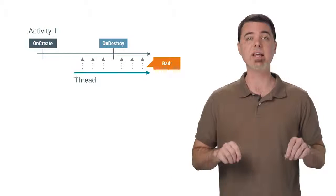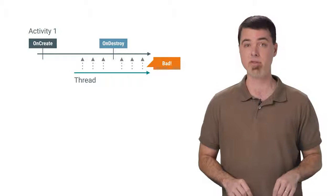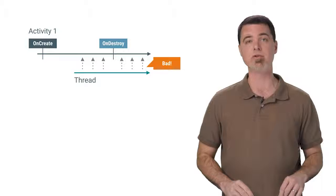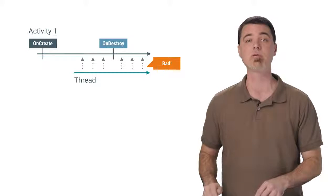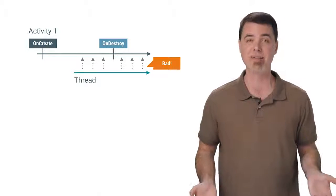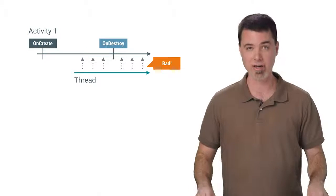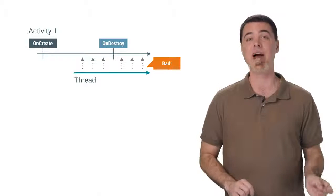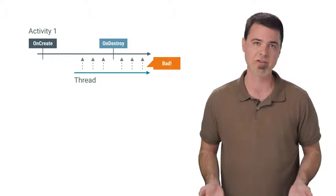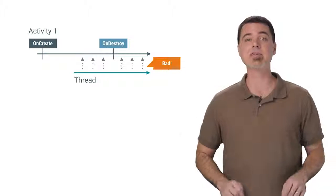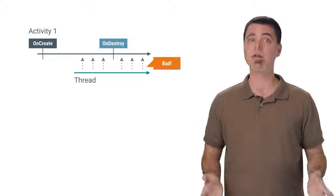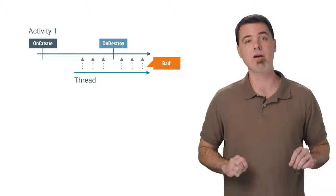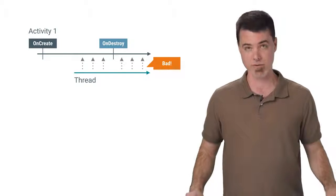If the activity ends before the work is complete, a few things will happen. First, because of the strong references to the views, the activity object will be kept in memory until the work finally finishes. This is a memory leak, and we don't have to tell you this is bad, since it can cause your app to run out of memory and eventually crash. Second, the late updates to these views are wasted because they're no longer visible. And third, you might have to repeat the work for a whole new set of views.